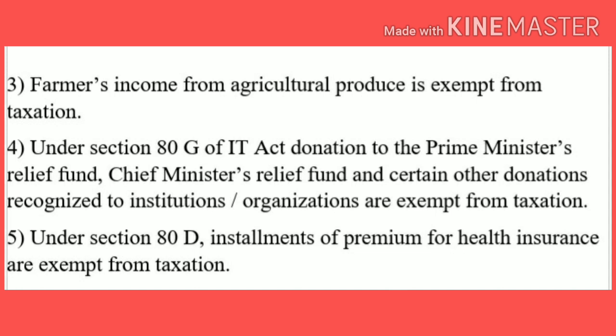A farmer's income from agricultural produce is exempt from taxation — it means a farmer will not pay any income tax. Next, under Section 80G of the IT Act, donations to the Prime Minister's Relief Fund, Chief Minister's Relief Fund, and certain other donations recognized to institutions or organizations are exempt from taxation.